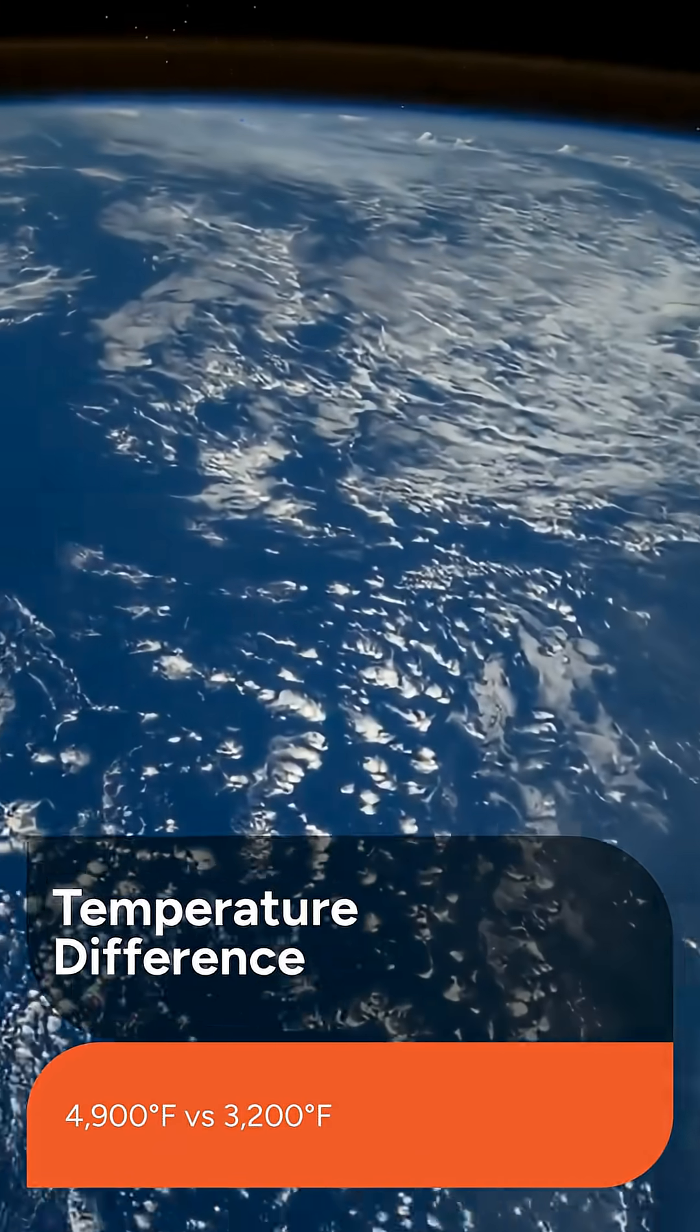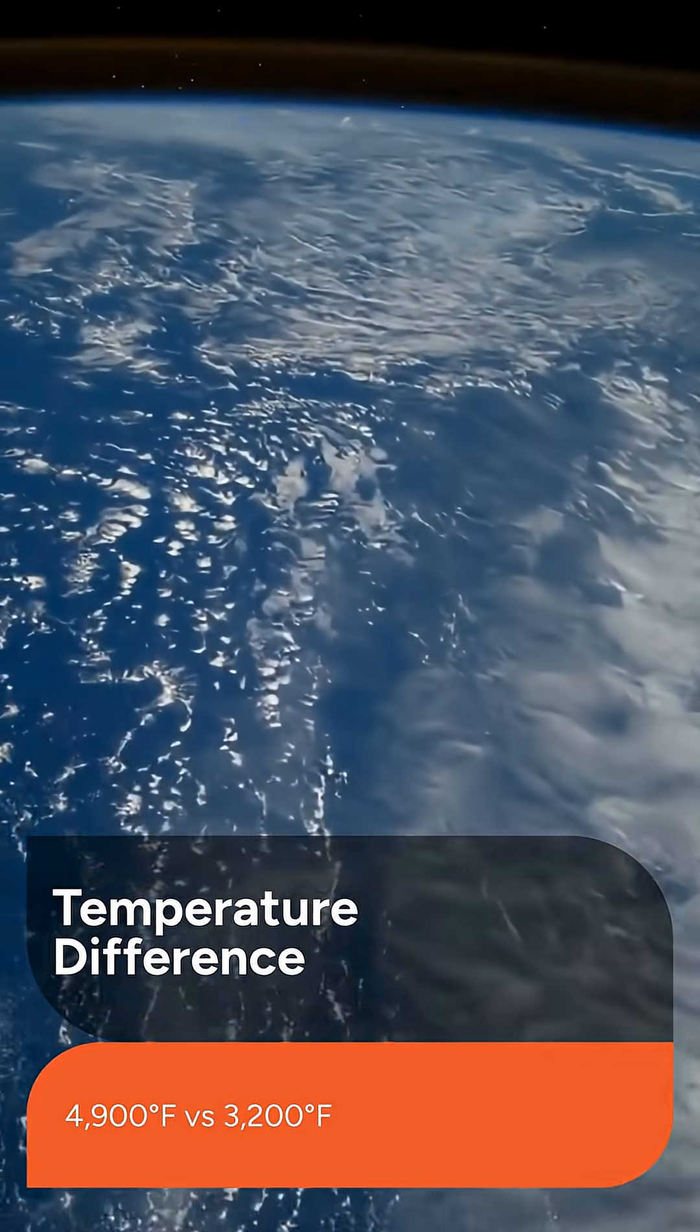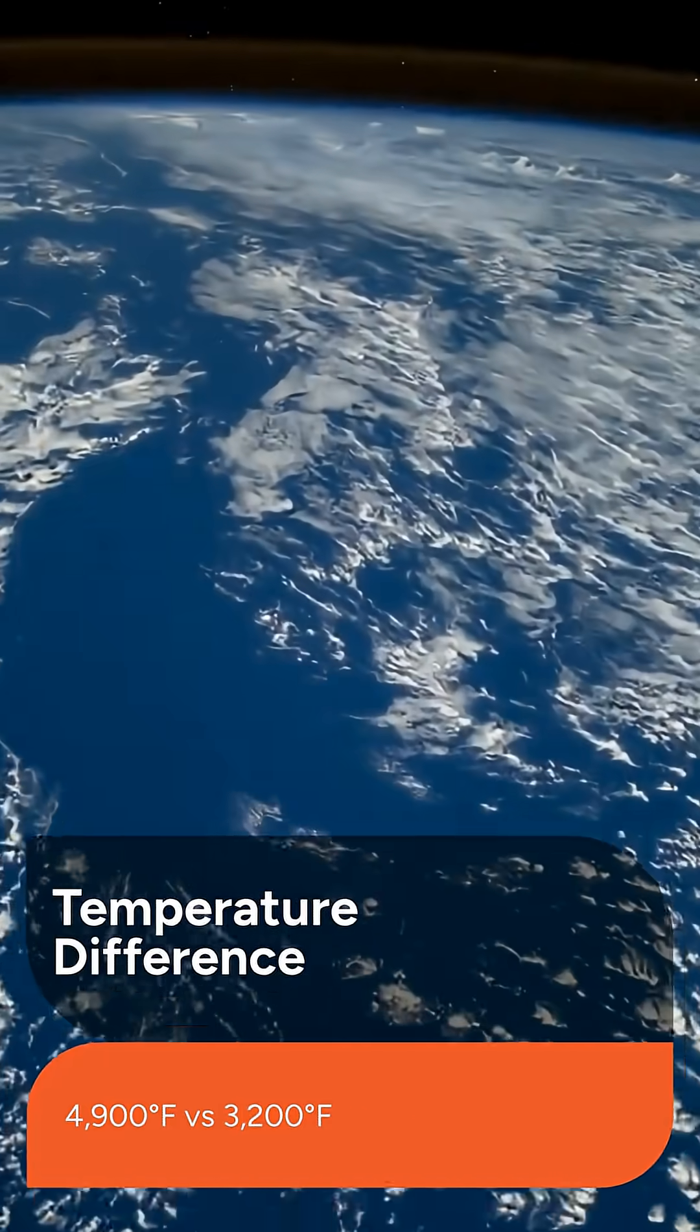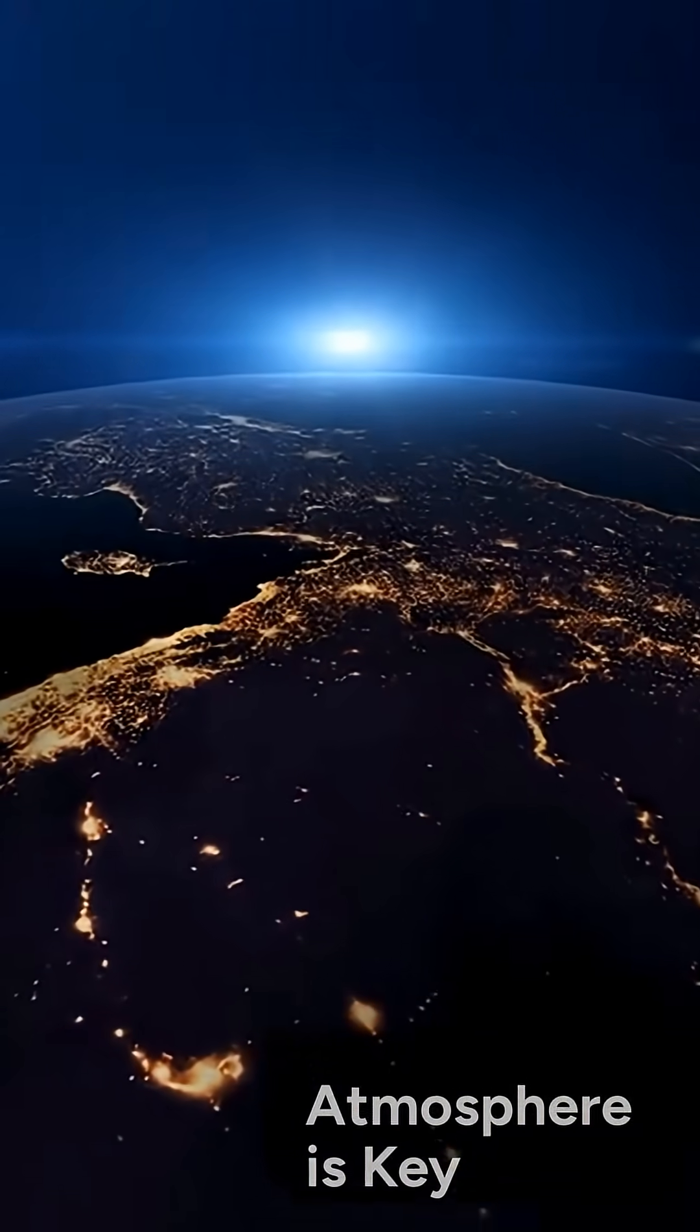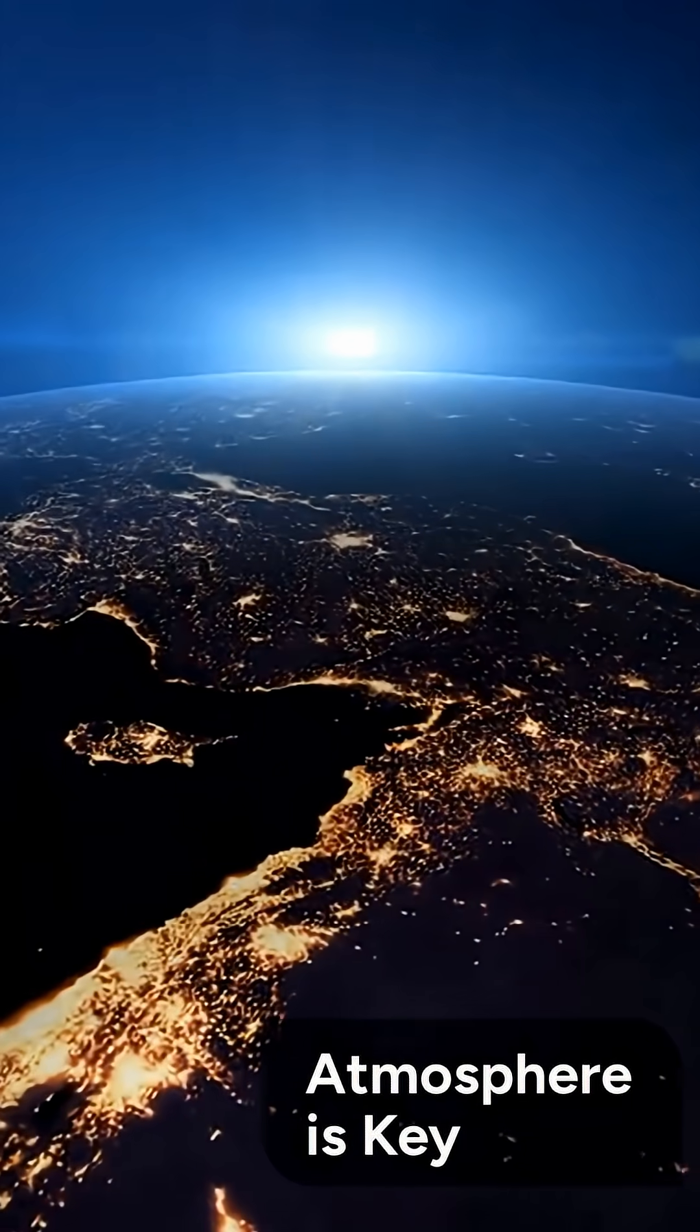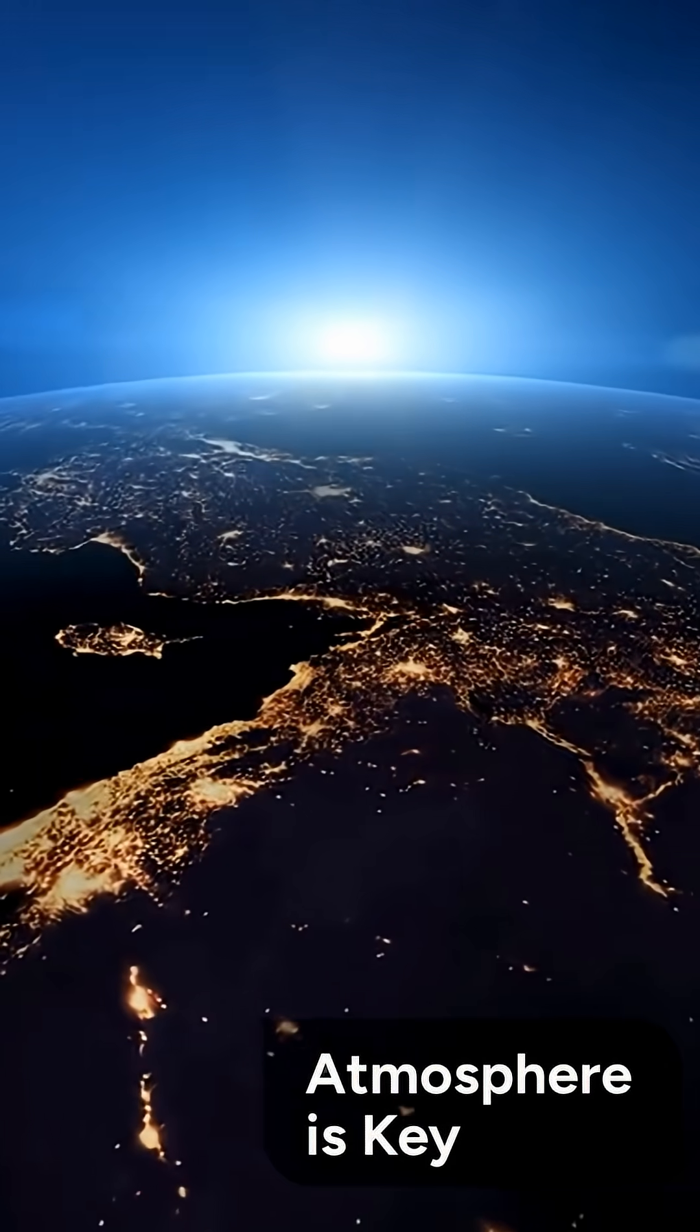While a bare rock planet was expected to be around 4,900 degrees Fahrenheit, the NIRSpec observations showed a much cooler day side temperature of about 3,200 degrees Fahrenheit. This significant cooling strongly suggests that the presence of a thick atmosphere is the most plausible explanation for the observed results.